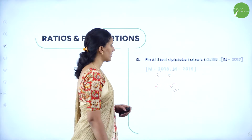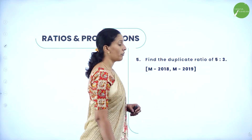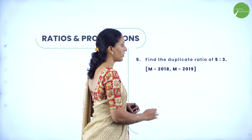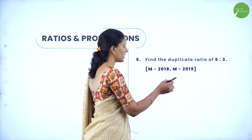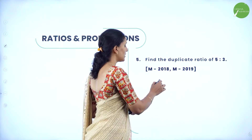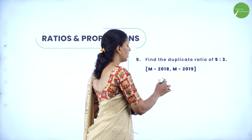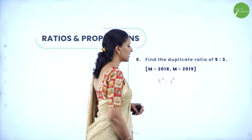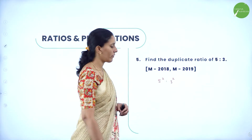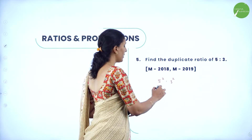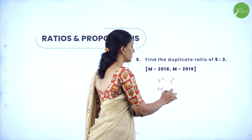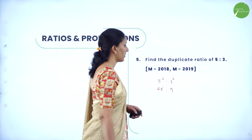Next: find the duplicate ratio of 5 is to 3. When we say duplicate ratio, we square the antecedent and consequent. So we get 25 is to 9.